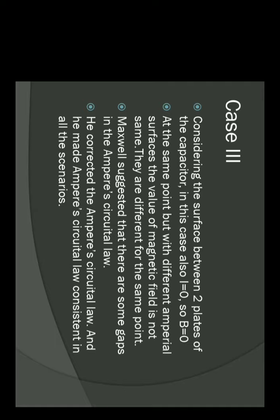So this was inconsistent — at the same point, with different Amperian loop surfaces, the value of the magnetic field is not the same. They are different for the same point. So Maxwell said that the Ampere circuital law has some inconsistency. Just outside the capacitor, the magnetic field is μ₀I / 2πr, but as soon as we go inside the capacitor, the magnetic field becomes 0. How is this possible?